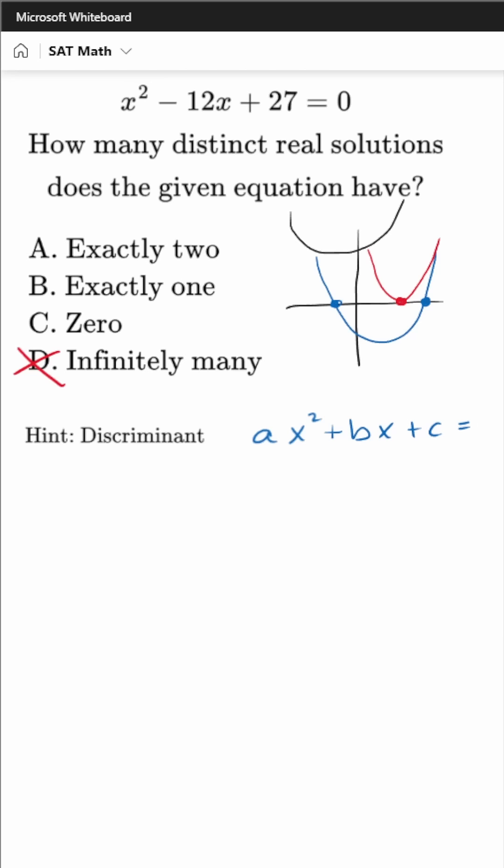If we have a quadratic equation in the standard quadratic form, then the discriminant of that quadratic is given by b squared minus 4ac.